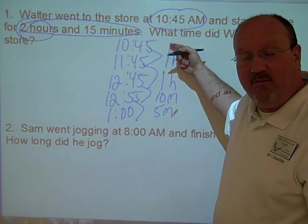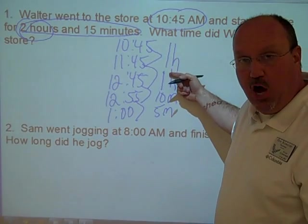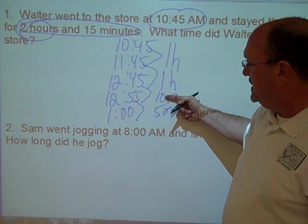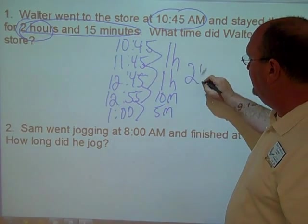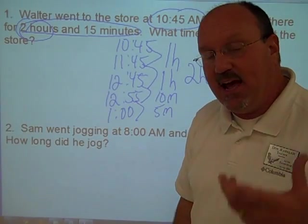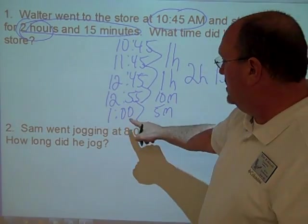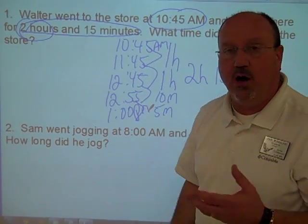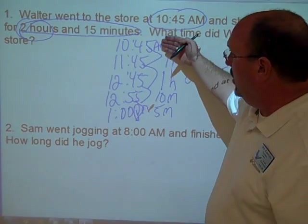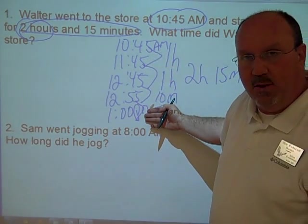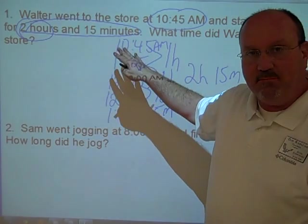I can double check my math here. That's why we have them listed, or make a time log of the chunking that they've done. One hour, two hours, ten, fifteen. That's two hours, fifteen minutes. And the time that he exited from the store was 1:00. This was AM, this was PM because we crossed over twelve noon. So Walter entered the store at 12:45. He exited the store at 1:00 PM, two hours and fifteen minutes later.